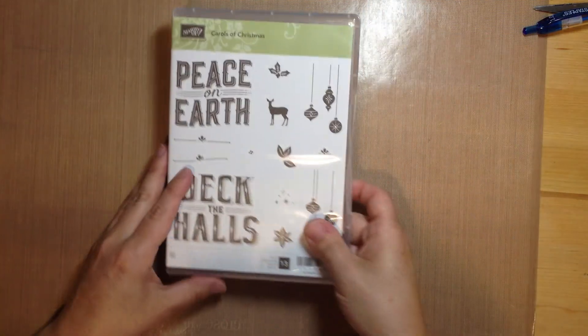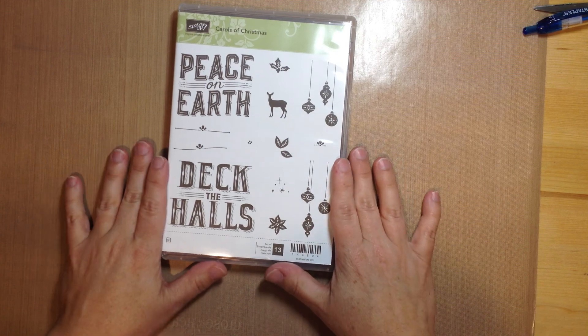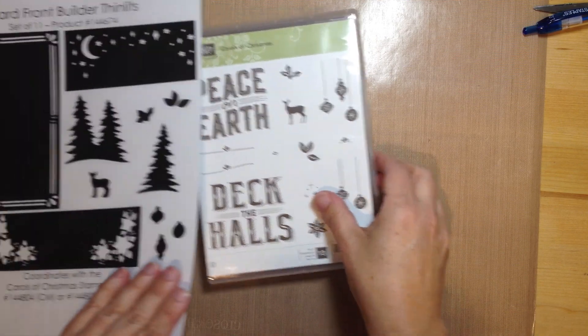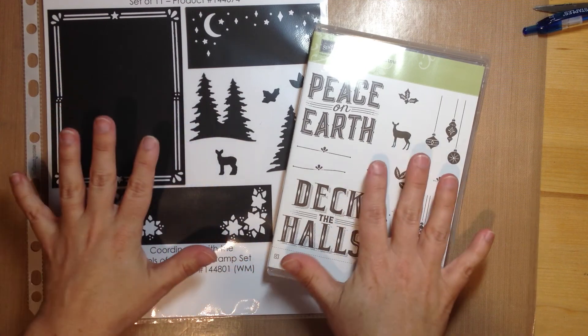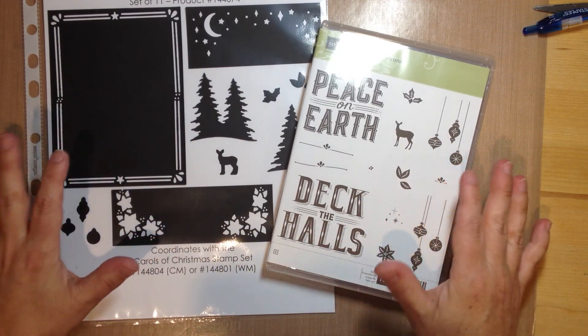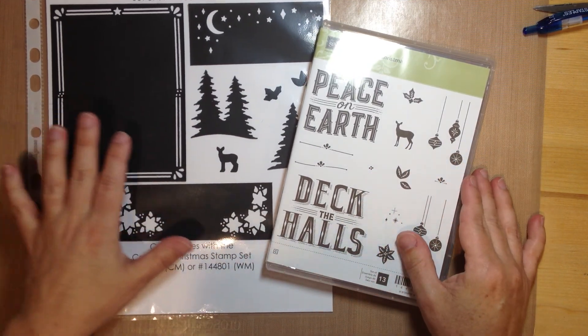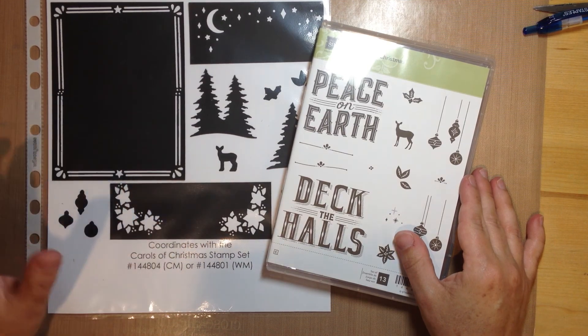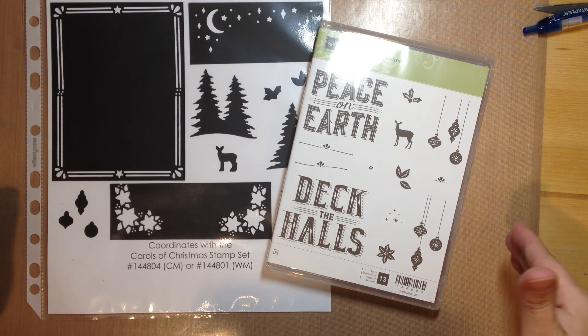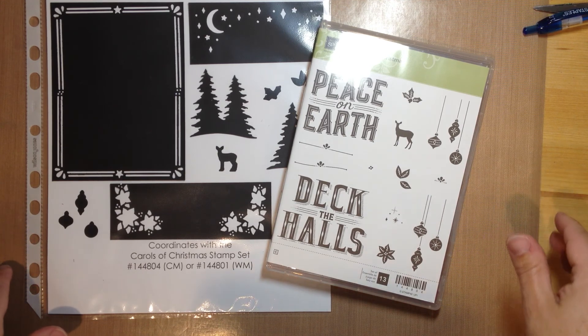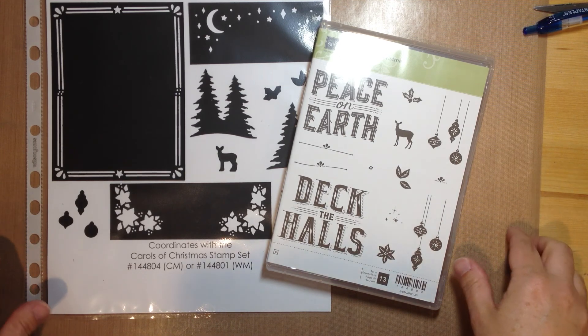So we are starting with, first of all, let's talk about what we're using. We are using the Carols of Christmas stamp set. This is available in a bundle as well. When you combine the bundle, it just offers so much versatility. It's incredible. So it's bundled with the Card Front Builder Thinlits right now. And it is available this month and will carry over and be available in the 2017 Holiday Catalog.